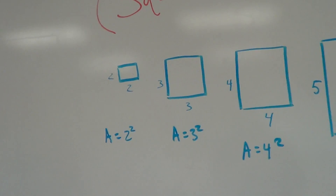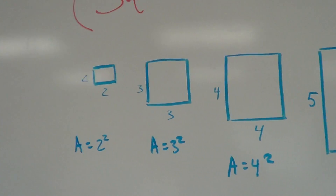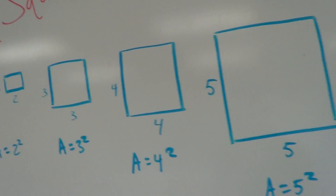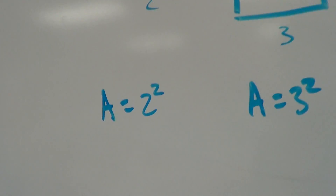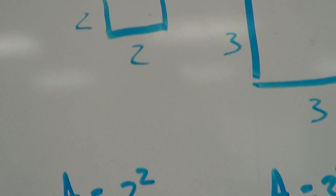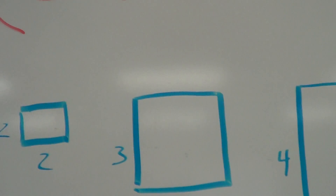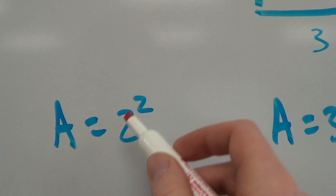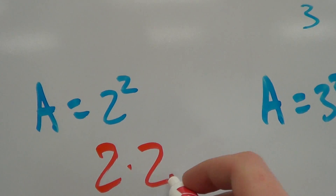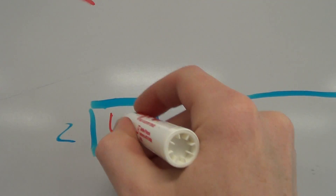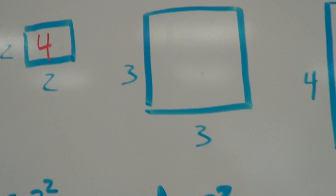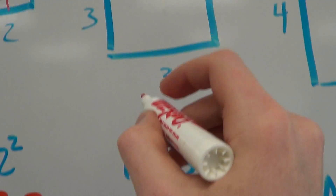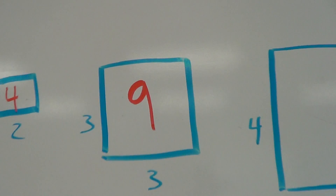If you look at these examples, I have a 2 by 2 square, a 3 by 3 square, a 4 by 4 square, a 5 by 5 square, and a 6 by 6 square. These are all squares and I can write their areas as, for example, 2 squared or 3 squared. If I do 2 squared, that means 2 times 2, which is 4, so the area here is 4 square units. And 3 squared means 3 times 3, which is 9, so this is 9 square units.